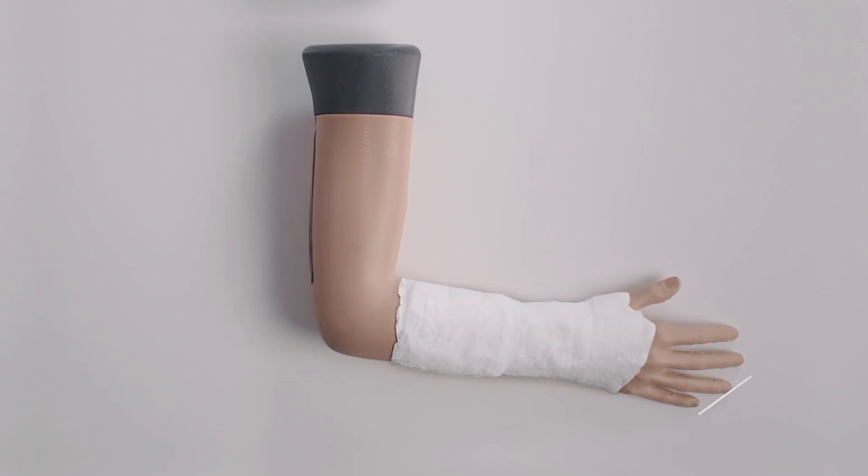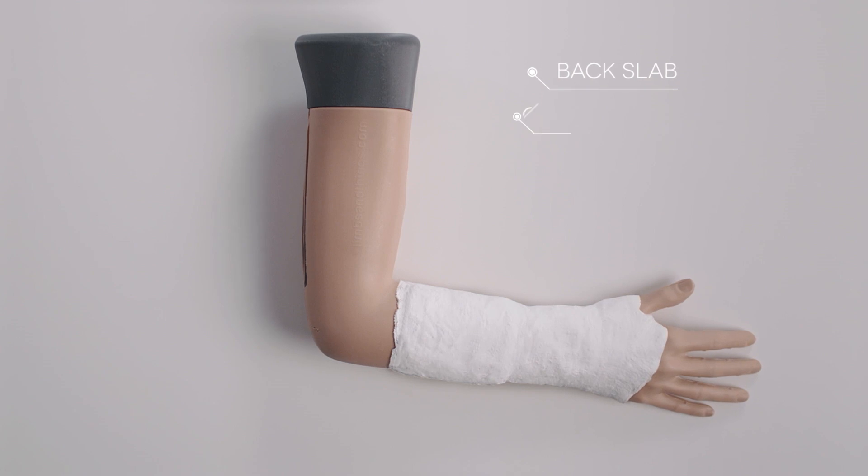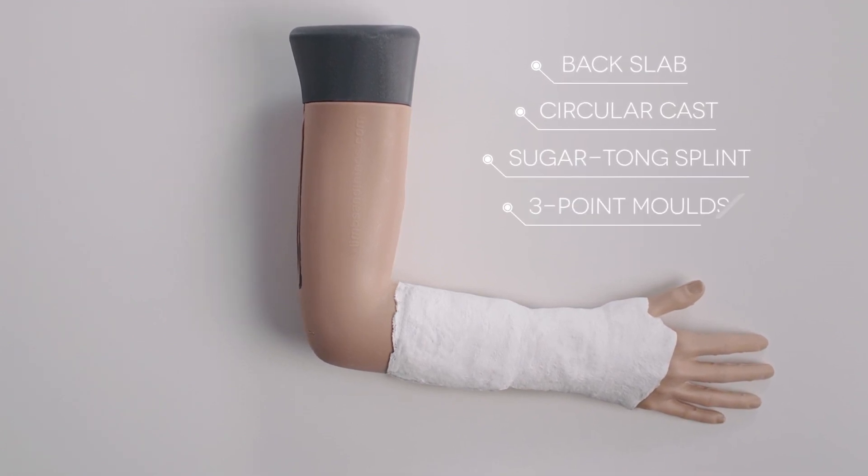The model also accommodates a number of plastering techniques, including back slab, circular cast, sugar tong splint, and three-point molds.